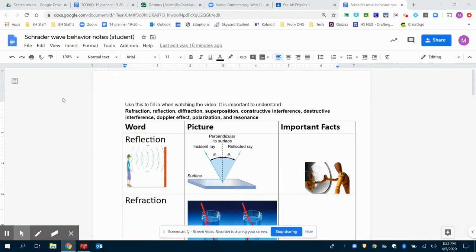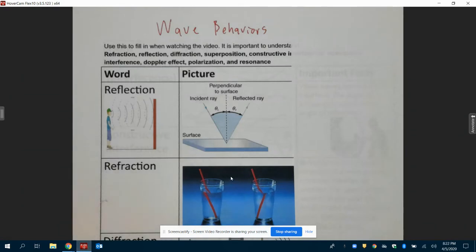I'm going to go through and take you through all the definitions of the terms for refraction, reflection, diffraction, superposition, constructive interference, destructive interference, Doppler effect, polarization, and resonance. So here we go.